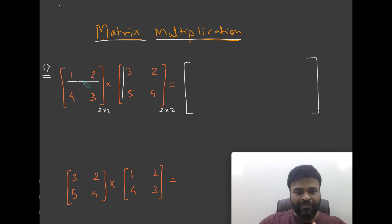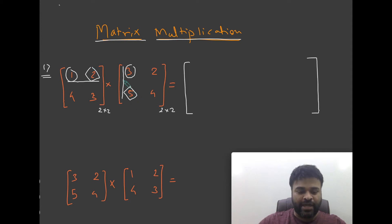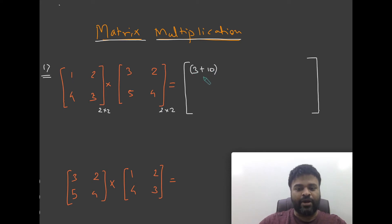I repeat: the row of the first matrix is to be multiplied with the column of the second matrix. You multiply the first element of the row with the first element of the column, and the second element of the row with the second element of the column. So it is 1 times 3, that gives 3, then 2 times 5 is 10, and you add the products: 3 plus 10 gives 13.